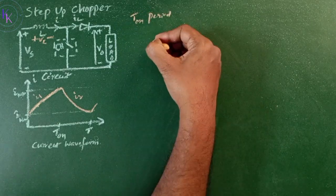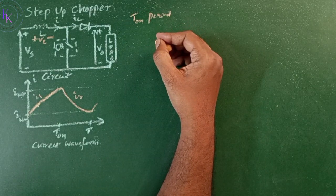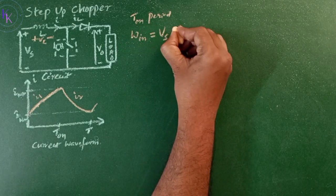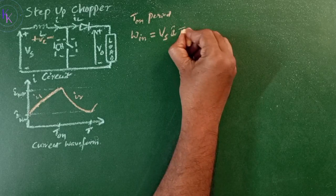During the turn-on period, the chopper is closed and the energy is stored in the inductor. That is given by W input equals voltage times current times turn-on time.